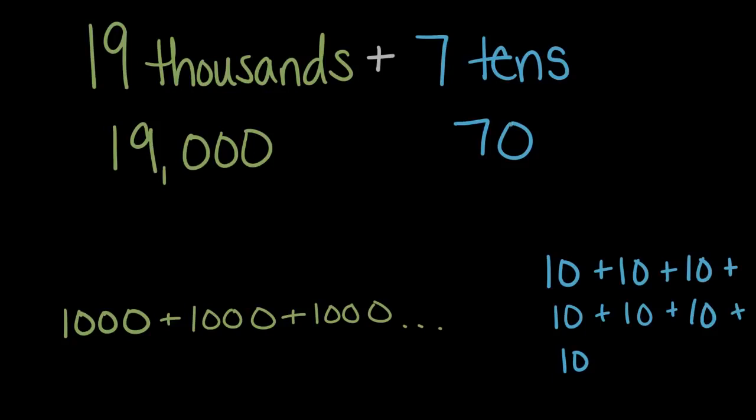And then if we wanted to combine these or add these, we would have 19 thousands, zero hundreds, the seven tens and zero ones, or 19,070.